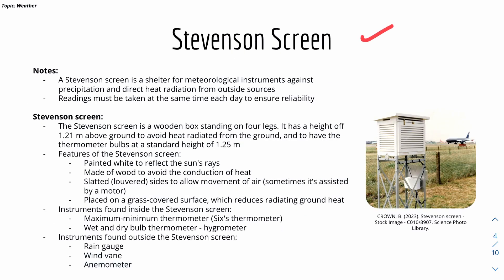Then we have Stevenson screen, which is basically a shelter for a meteorological instrument against precipitation and direct heat radiation from outside sources. Here is a Stevenson screen. Inside the screen, there are different instruments, for example, thermometer.